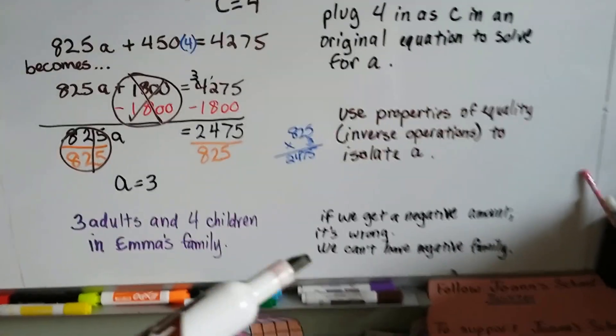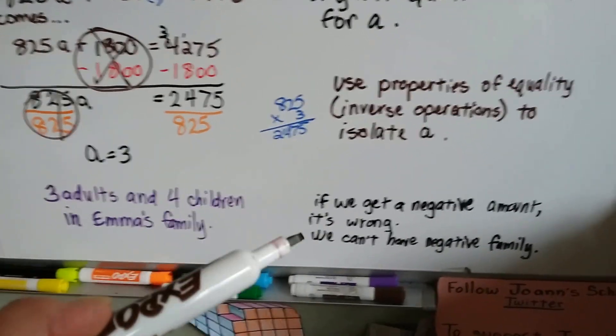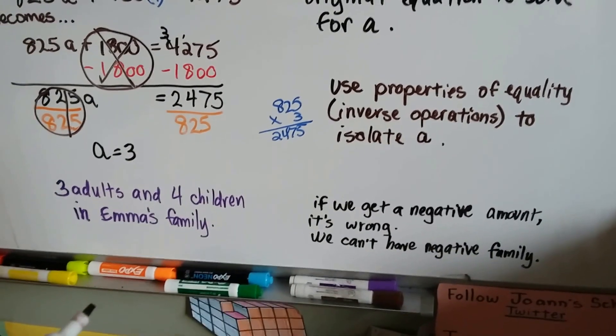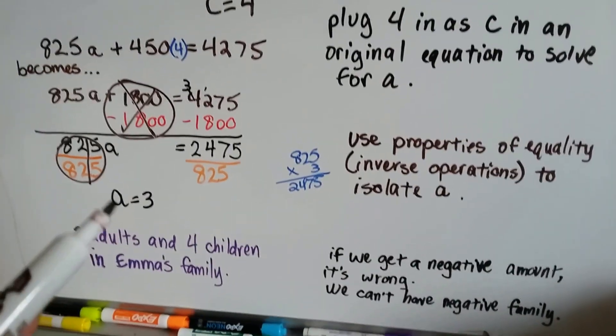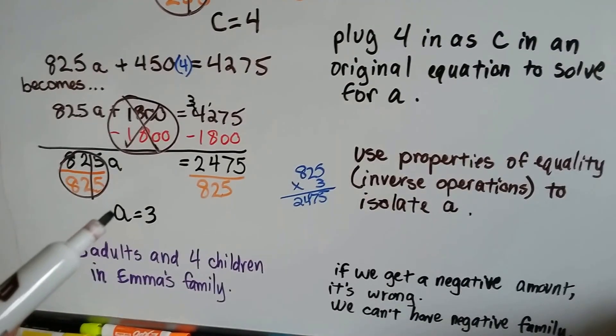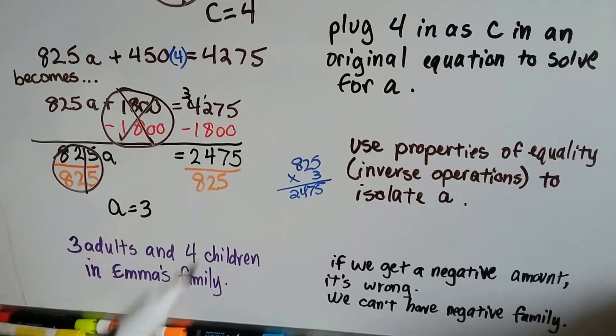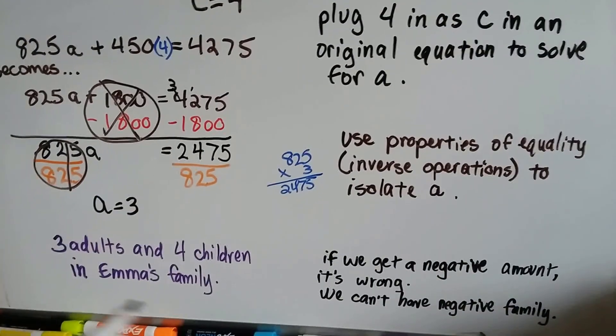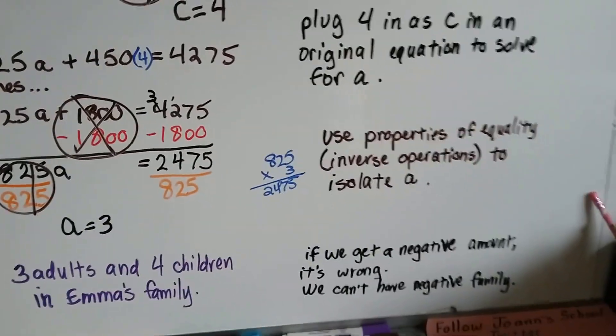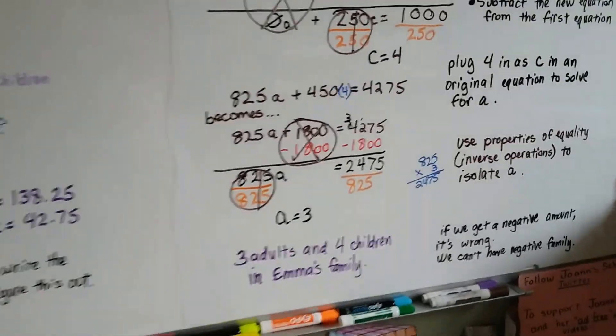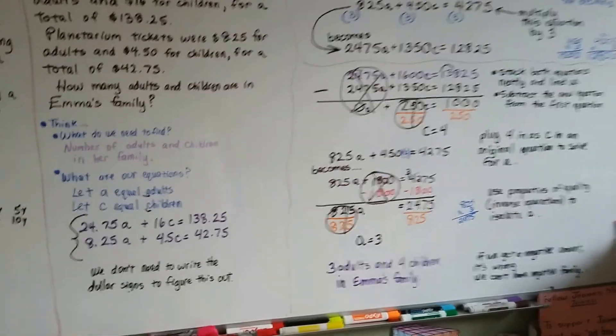Now, if something happened when you were doing this, and you got a negative amount, well, it would be wrong because you can't have negative family members. You can't have negative 3 adults and positive 4 children. That wouldn't make sense. It would both have to be positive numbers, and then you know you did it correctly.